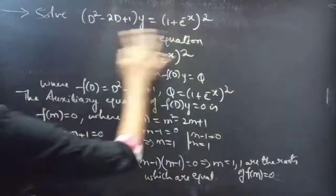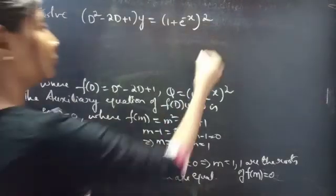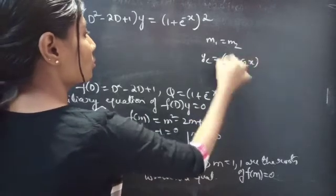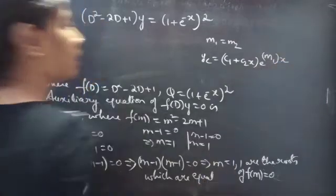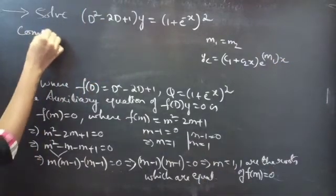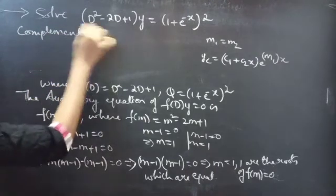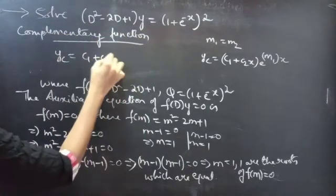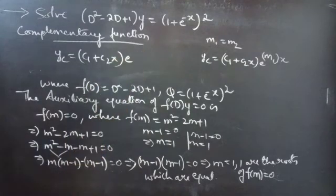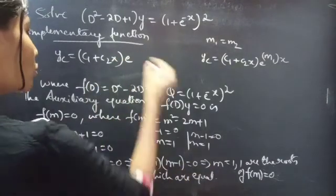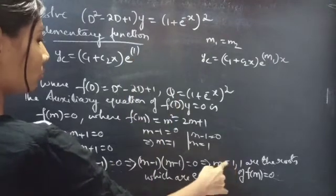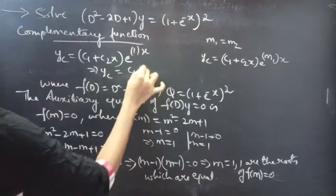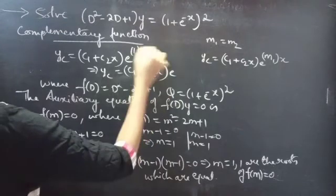The roots of f(m) = 0 are equal. We know that when two roots are equal, say m1 = m2 = m, the complementary function is yc = (c1 + c2·x)·e^(m1·x). Using this, with m1 = m2 = 1, we get yc = (c1 + c2·x)·e^x.